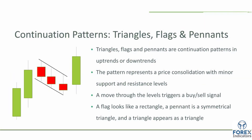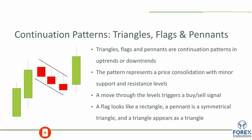Triangles, flags, and pennants are continuation patterns in either an uptrend or a downtrend. Our graph to the left shows a flag continuation pattern in a bullish uptrend. The pattern represents a price consolidation with minor support and resistance levels. We can use these support and resistance levels as buy signals in the trend, just as we used exponential moving averages as support levels to give us buy and sell signals. We can use triangles, flags, and pennants in the same way.